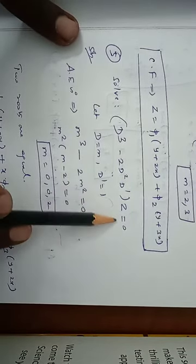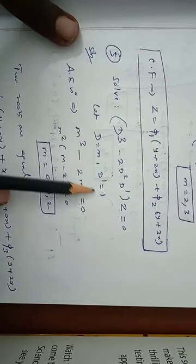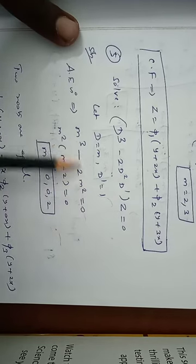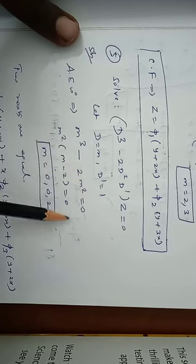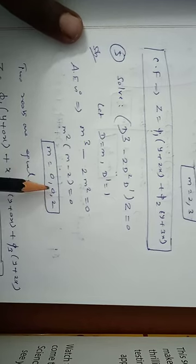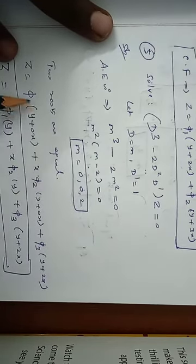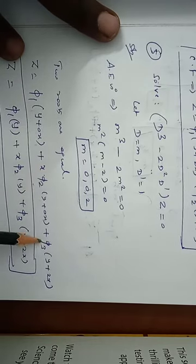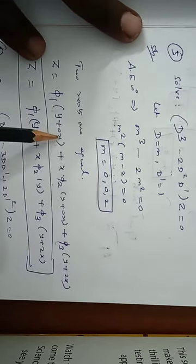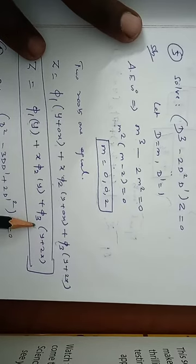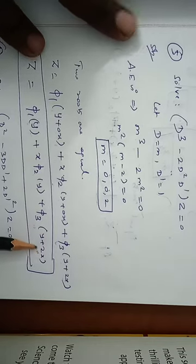Problem 5: Solve D³ - 2D²D'z = 0. Let D = m, D' = 1. The auxiliary equation is m³ - 2m² = 0. Taking m² as common: m²(m - 2) = 0. So m = 0, 0 and m = 2. Since 0 is repeated twice, z = φ₁(y) + x·φ₂(y) + φ₃(y + 2x).